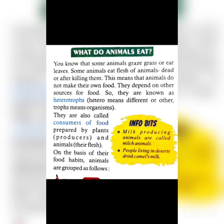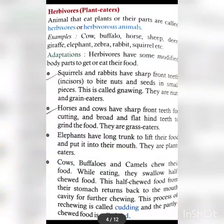Heterotropes are also called consumers — they depend on food prepared by plants and animals. On the basis of their food habits, animals are grouped as follows. Animals that eat plants or their parts are called herbivores.